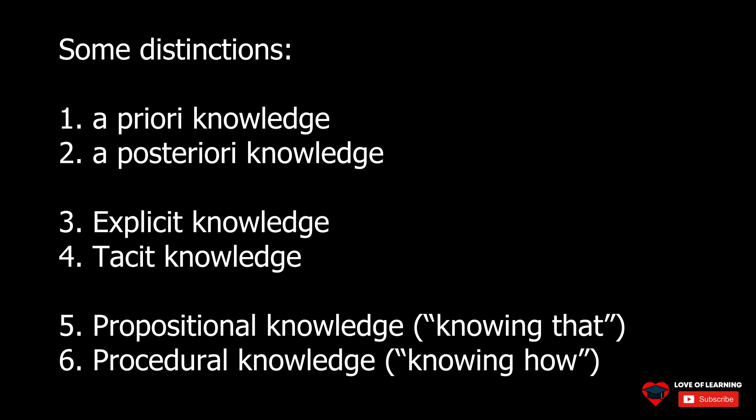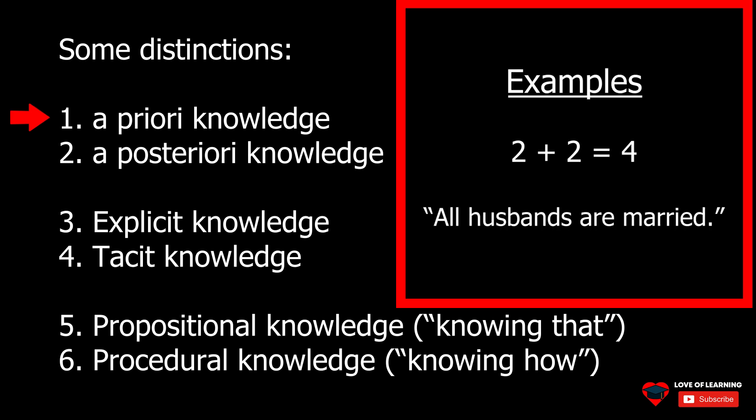This list shows some of the common distinctions. One of the most important distinctions in epistemology is between what can be known a priori and what can be known a posteriori. A priori knowledge is knowledge that is known independently of experience, that is, it is non-empirical, or arrived at before experience, usually by reason.